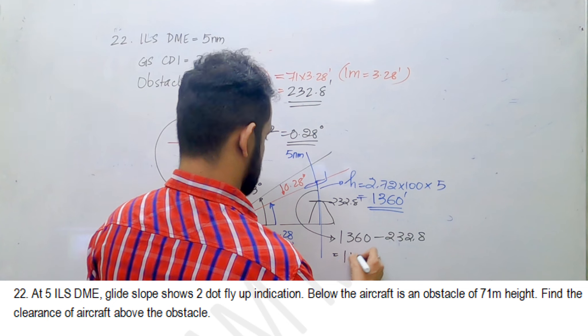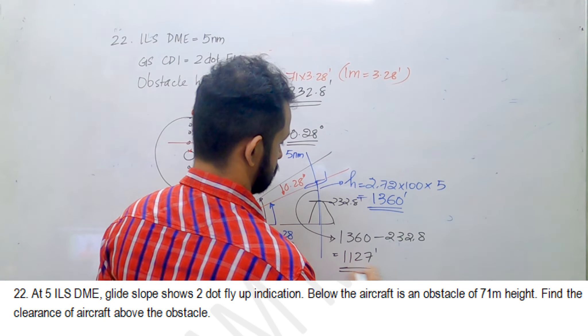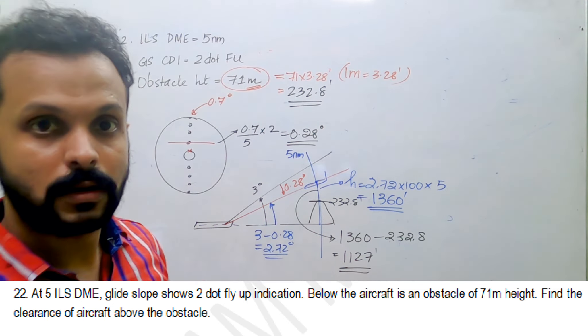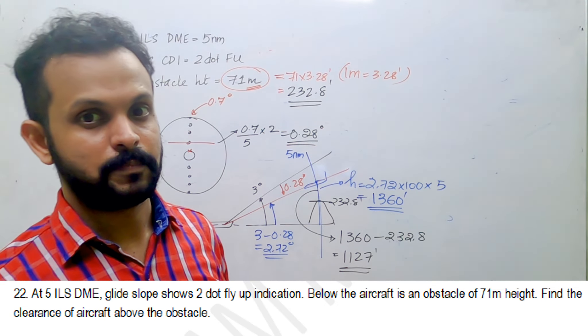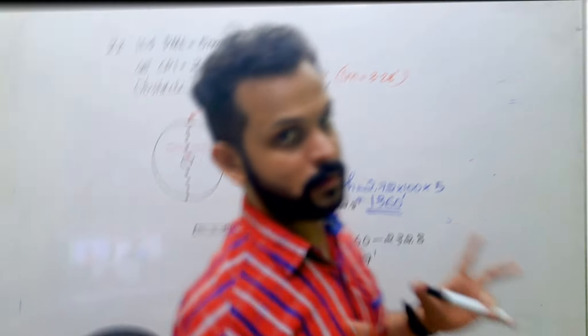1360 minus 233 is 1127 feet. Do not put 71 straight here and subtract. Remember 71 is in meters, the other is in feet. So be very careful with the units. 1127 feet clearance.